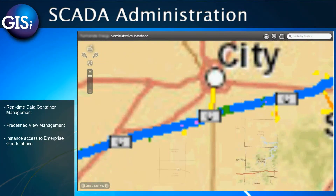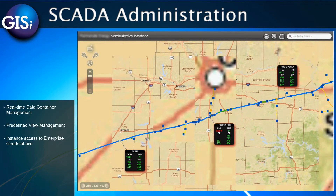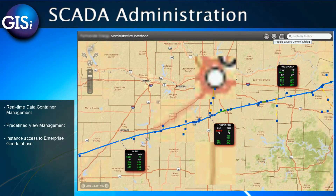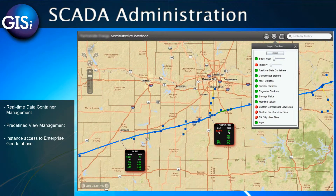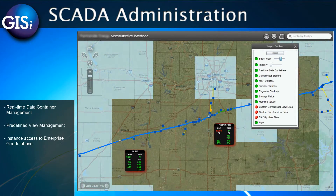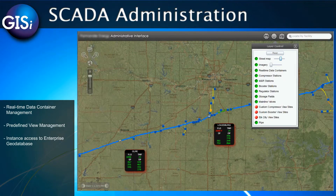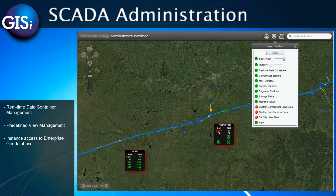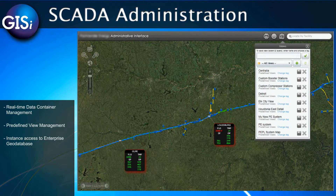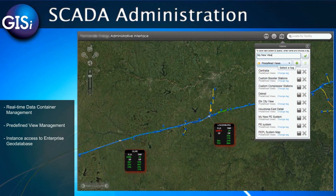The administration interface also allows for management of the predefined views. This is sort of like a bookmark operation, only that it manages the core default views for all users of the application. As an administrator, I can define the layers and the map extent for the new view. I can further set additional transparency parameters for the base map layers as needed.